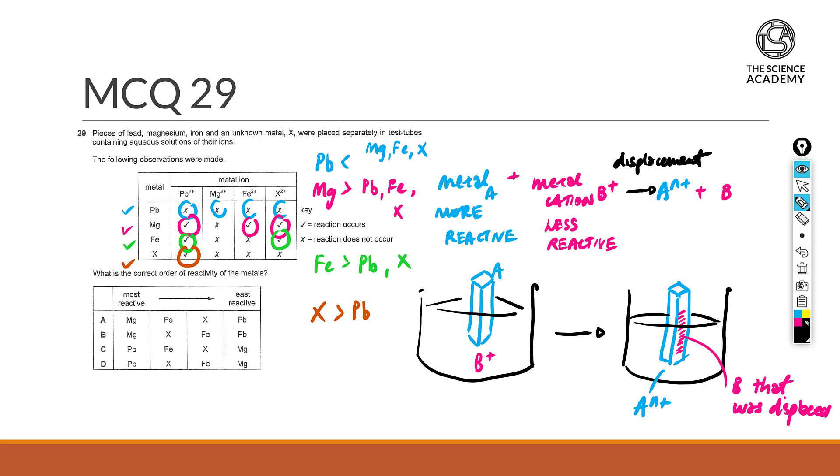So ordering from most reactive metal towards the least reactive metal. The one that has the greatest amount of displacement would have been the most reactive, and that will take place for magnesium, and after magnesium, this will be followed by iron.